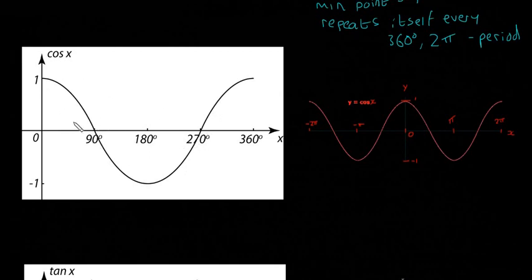Same wavy thing, but it hits the x-axis at different points. So here it hits the x-axis at 90, and the lowest point is at 180, 270. And then again, repeat itself here.